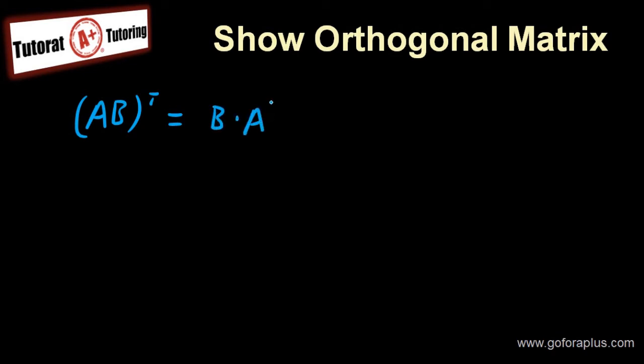So what I want to do first is to apply the transpose into each matrix here. That means you have to flip them. B transpose times A transpose is your AB transpose here. When you apply the transpose, you have to flip the matrix.